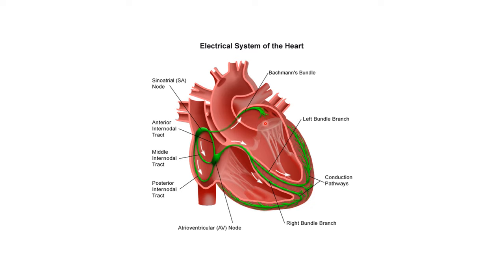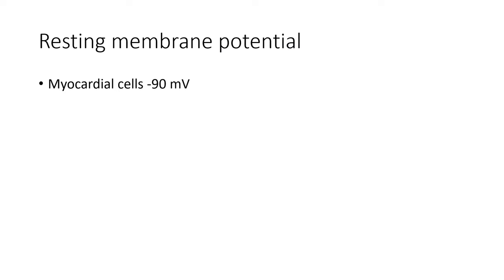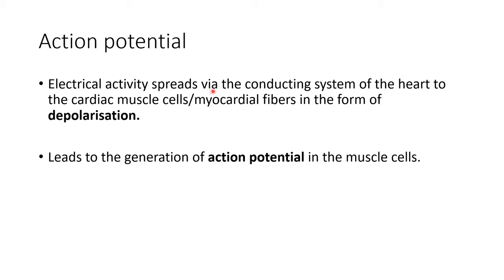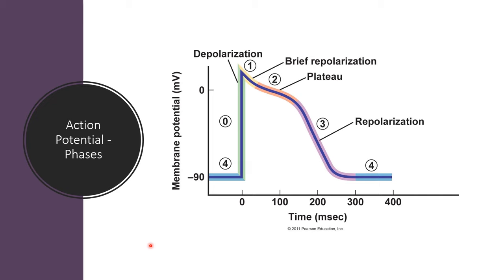The myocardial cells — that is, the cells of the muscles of the heart, namely the atrial and ventricular muscle cells — have a resting membrane potential of minus 90 millivolts. Electrical activity spreads via the conducting system of the heart to the cardiac muscle cells, or myocardial fibers, in the form of depolarization. This depolarization leads to the generation of action potential in the muscle cells of the heart. This action potential has five phases: phase 0, 1, 2, 3, and 4.